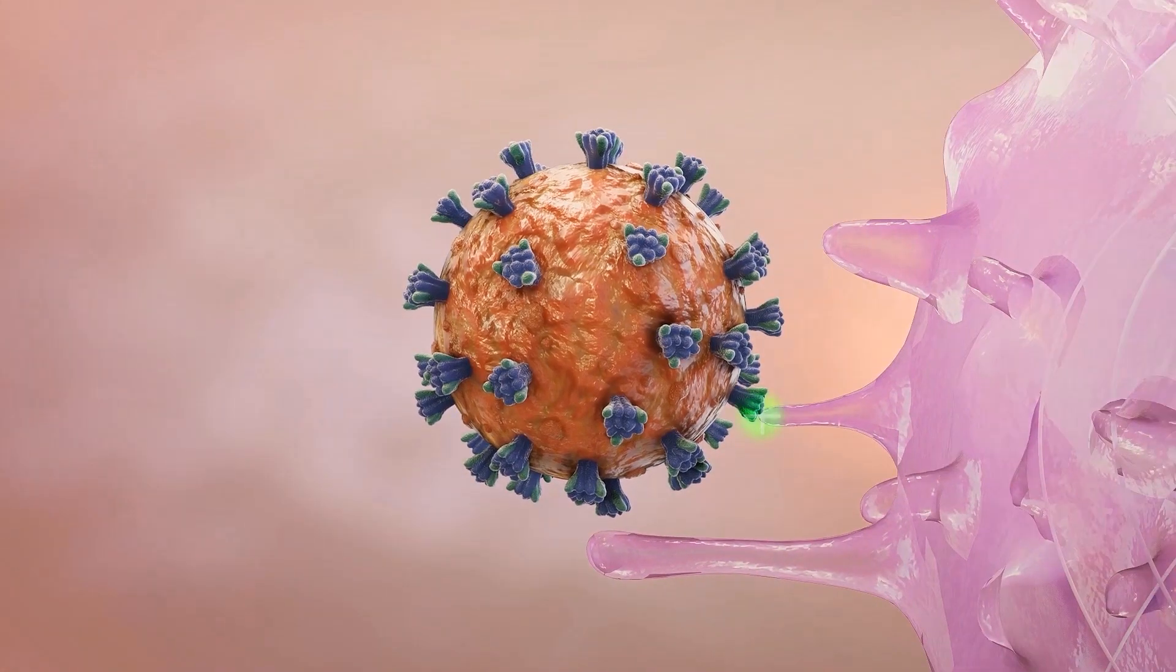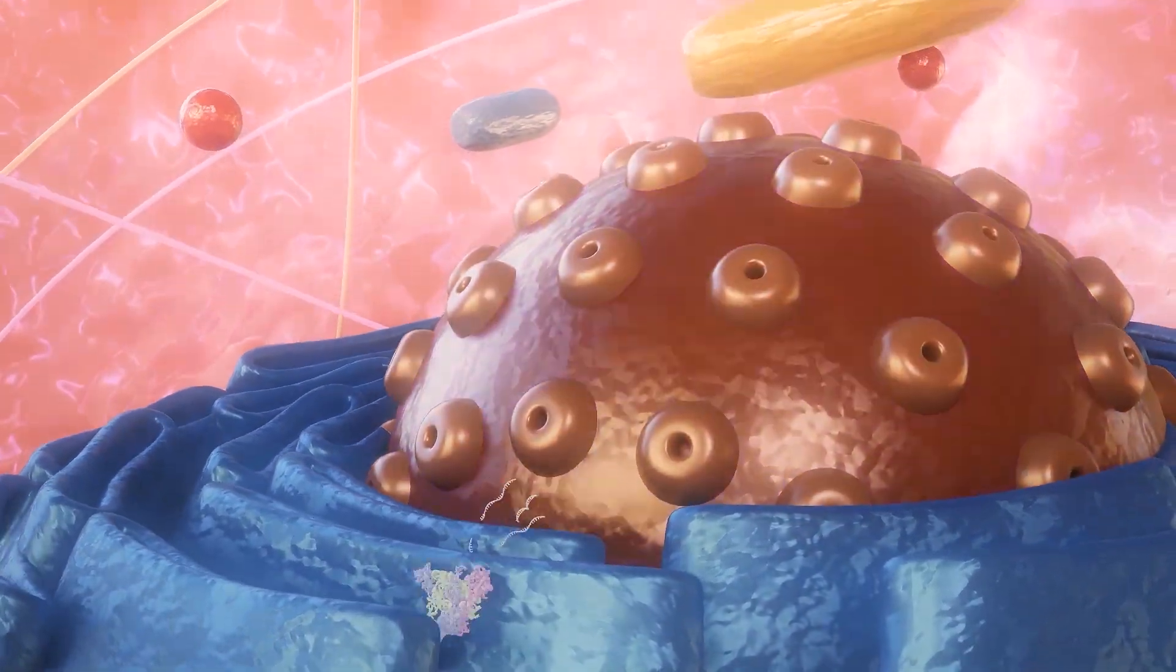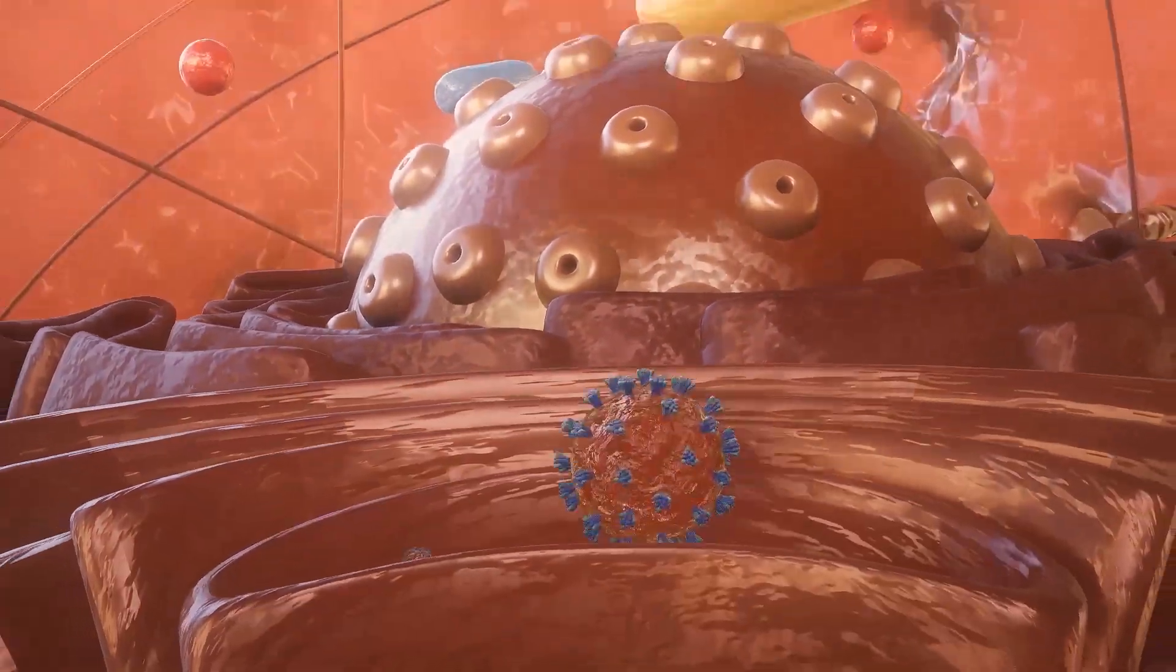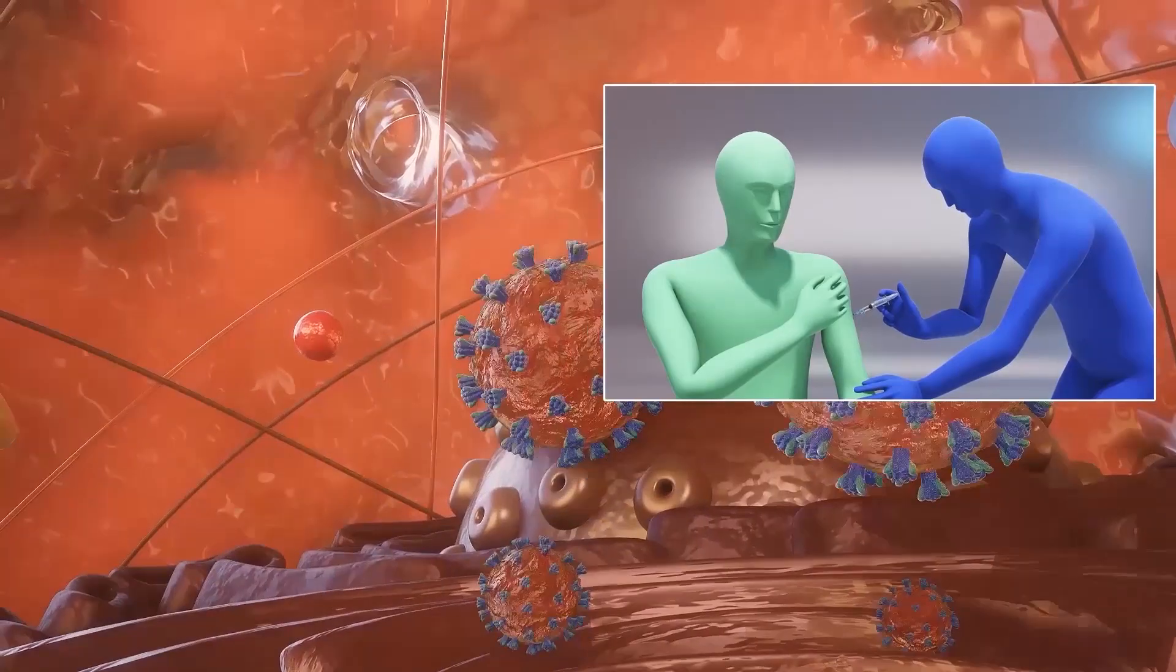A virologist in Johannesburg told Nature there are also hints the variant could dodge herd immunity conferred by T-cells, though Omicron's effect on vaccine efficacy and disease virulence is not yet clear.